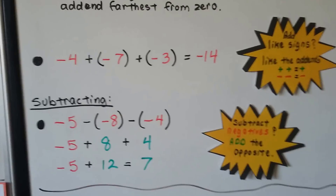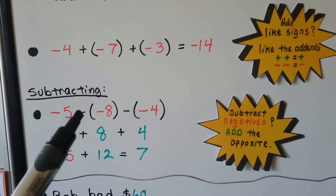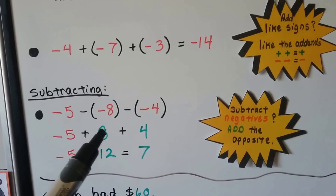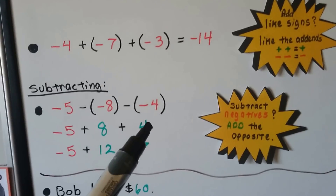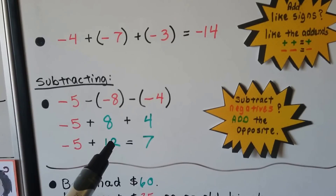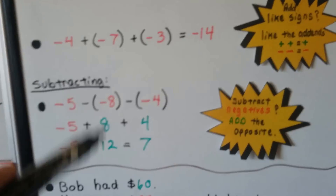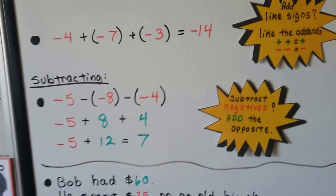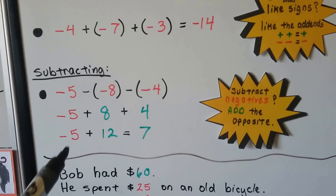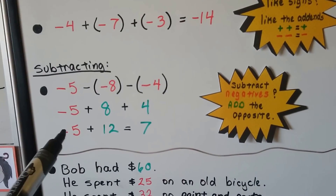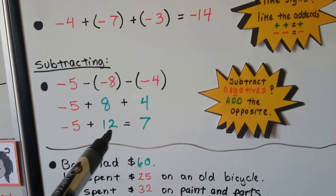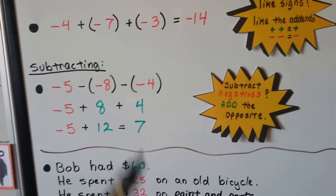When we're subtracting several negatives, we add the opposite. Instead of subtracting a negative 8, we add a positive 8; instead of subtracting a negative 4, we add a 4. So 8 plus 4 is 12. The minuend stays the same; it's the subtrahend and subsequent numbers that change to addition and the opposite. Now we have negative 5 plus 12. Following the rule for unlike signs, the difference is 7, and 12 is positive, so the answer is positive 7.